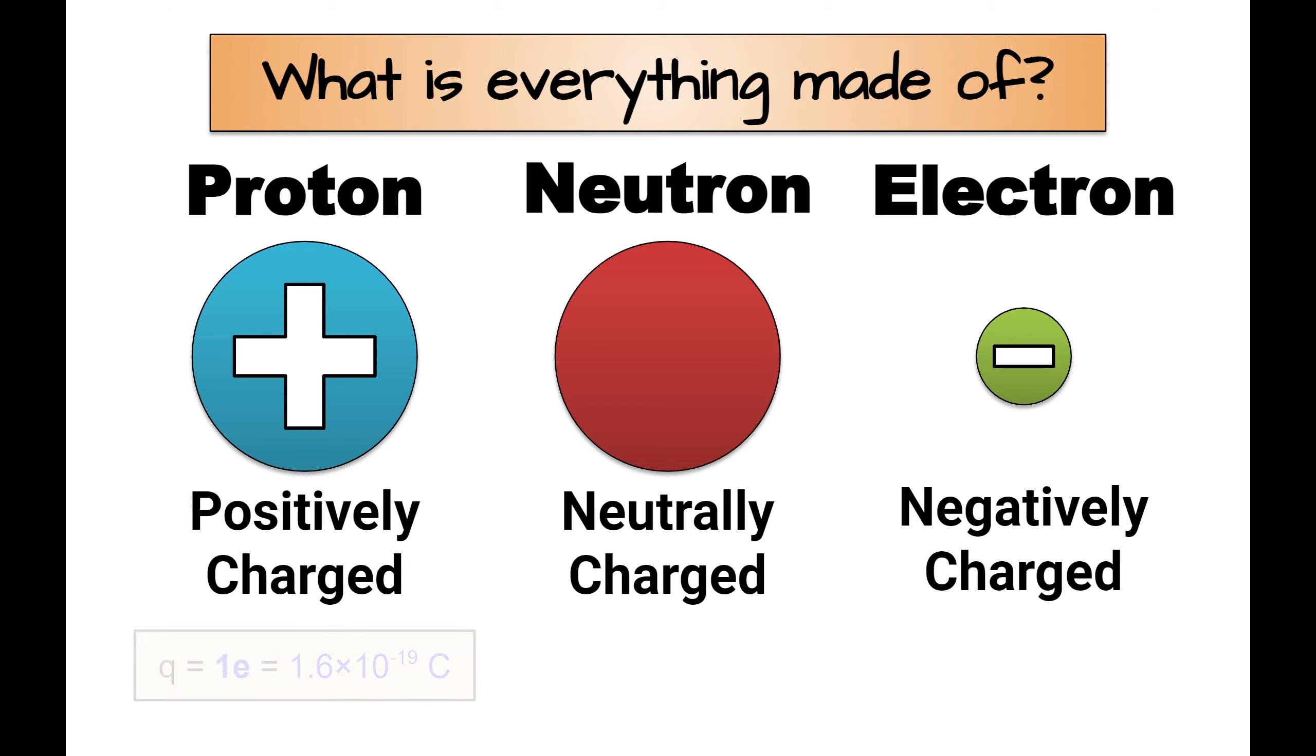Protons, which are positively charged, have a specific amount of charge referred to as the elementary charge. Again, elementary meaning basic, or the smallest amount of something you can have. The charge, or Q, of one proton is equal to one E. E stands for elementary charge. So in other words, a proton has the smallest amount of positive charge that is possible to exist in our universe. If you're curious what E is equal to, it's 1.6 times 10 to the negative 19 coulombs. That's a really small amount of coulombs, so it's a tiny charge.